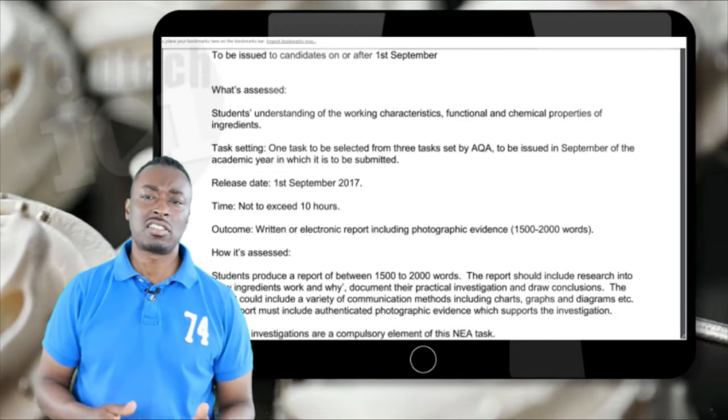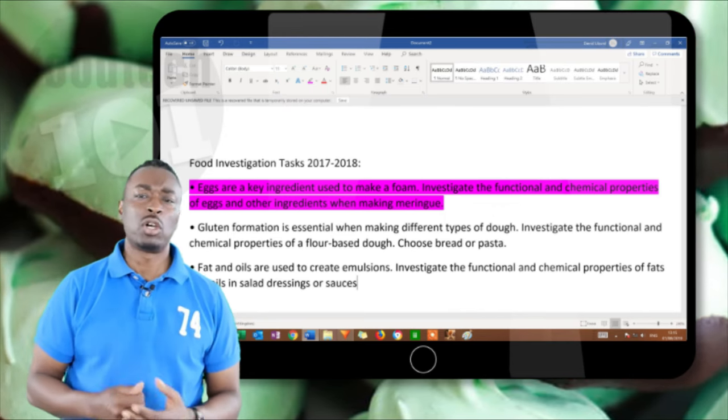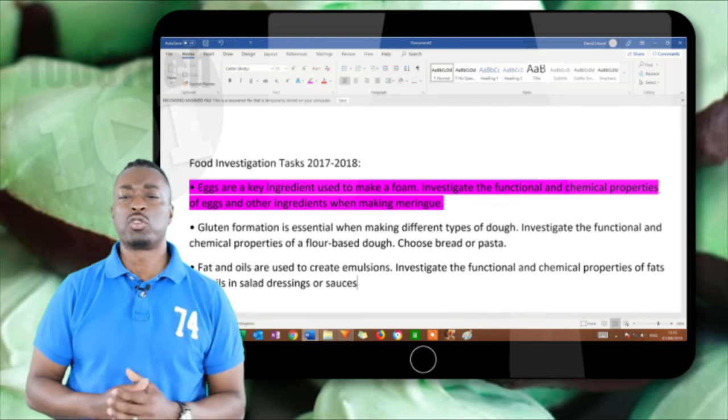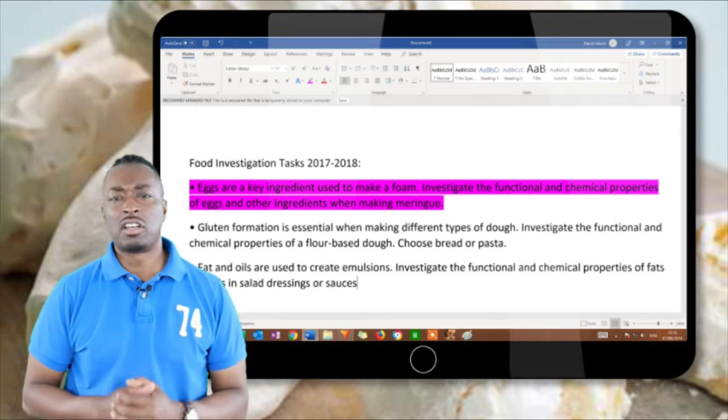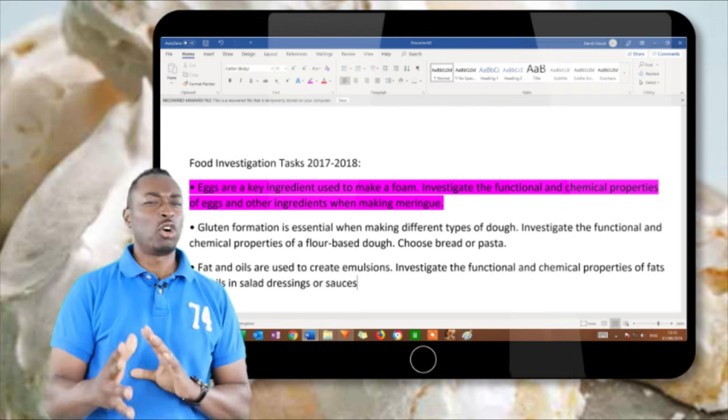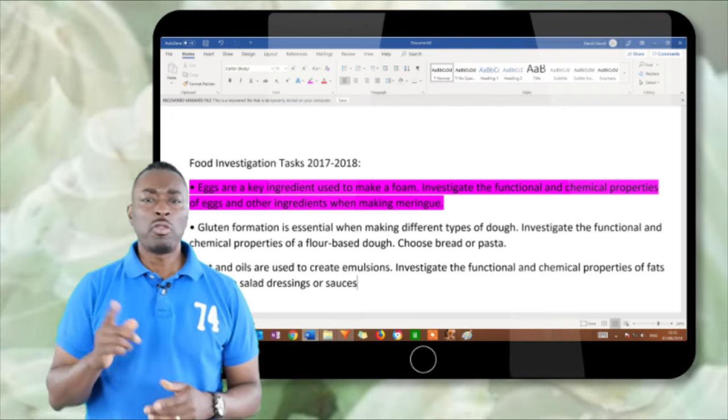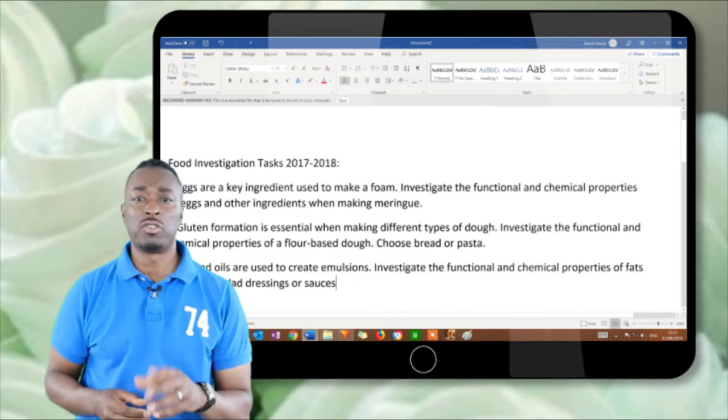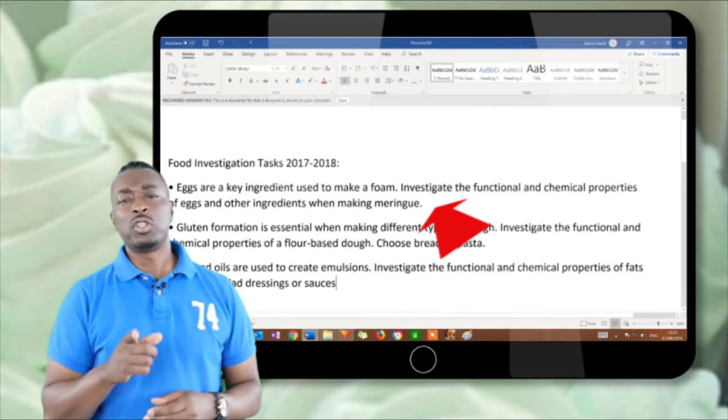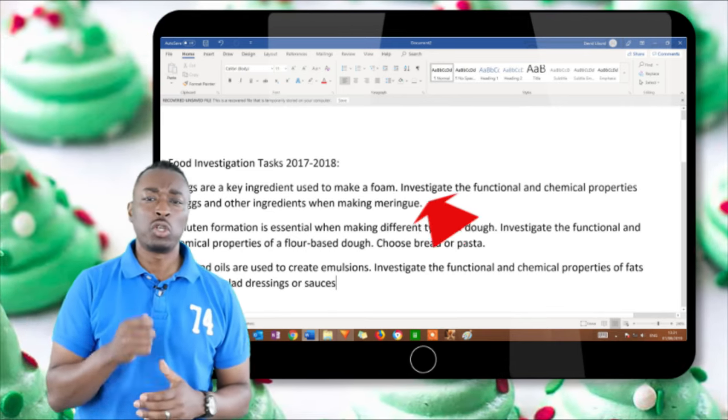Now when the exam board sets a task, they'll usually give you options, in most cases three options. Today we're going to explore one of those three options to help understand the process of analyzing the brief. I thought it's easy if we divide it up into three little sections. The first part is quite simple. On the screen you'll see an example of a brief, the three briefs. We're going to look at the top one to do with meringues.